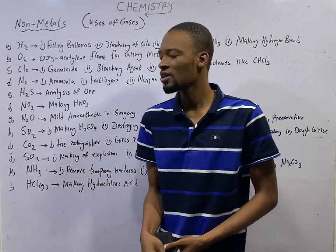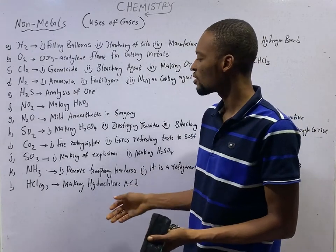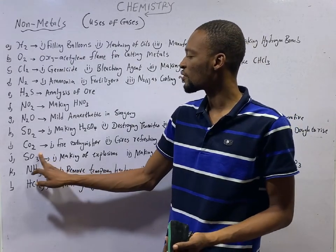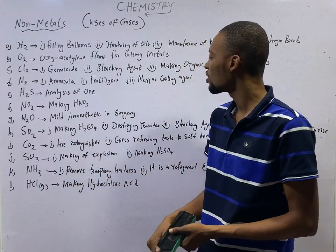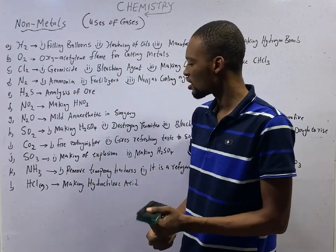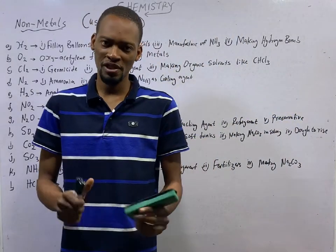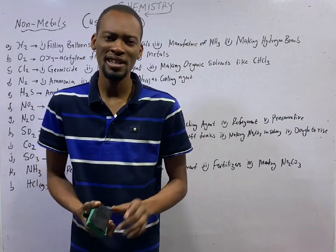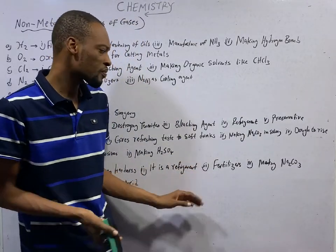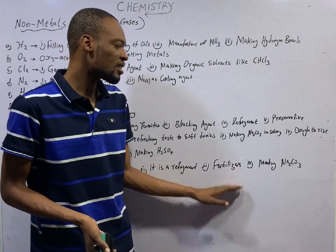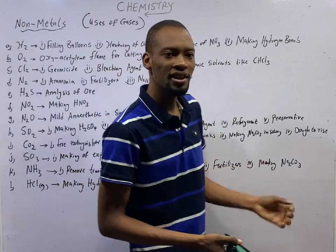Then, sulfur trioxide is used in making explosives and in making of H2SO4. Pardon, this is sulfur trioxide. This is sulfur dioxide. So sulfur trioxide is also used in making H2SO4 and it is used in making explosives. Ammonia is used to remove temporary hardness from water, which I analyzed while under water. Then, it is used as a refrigerant, it is used to make fertilizers, and it is also used to make sodium carbonate in Solvay process.